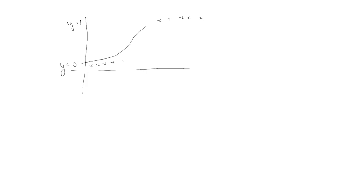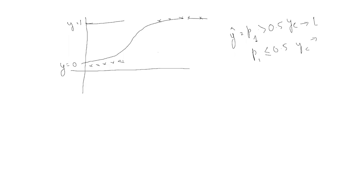You have data points where y=0 (benign tumors) and y=1 (malignant tumors), and we fit an S-curve through them. The decision boundary is that particular point in x which separates negative predictions from positive predictions. To handle the continuous output: if y-hat (probability of belonging to class 1) is greater than 0.5, the predicted class is 1; if less than or equal to 0.5, the predicted class is 0. The 0.5 threshold seems rational.